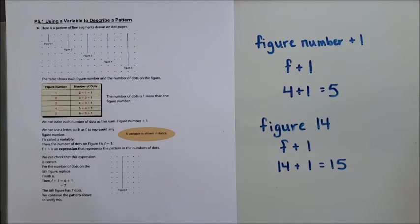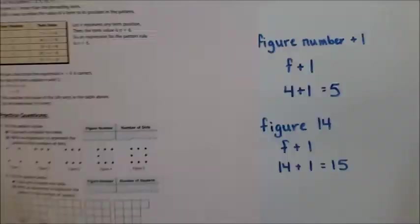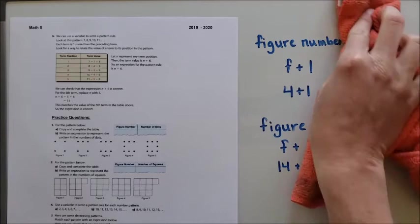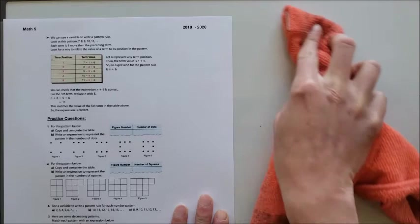We can also use a variable to write a pattern rule. So that is a pattern rule that we just covered, but we can use it to do other pattern rules as well. So I have here a pattern. It goes seven, eight, nine, 10, 11.